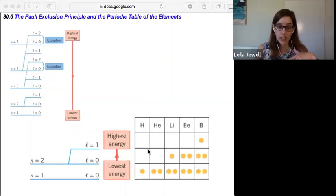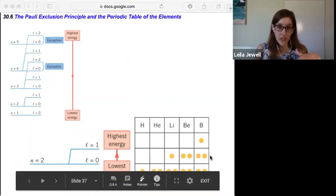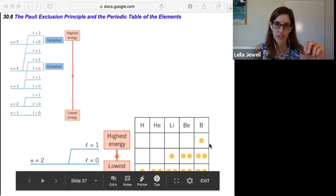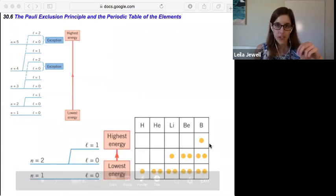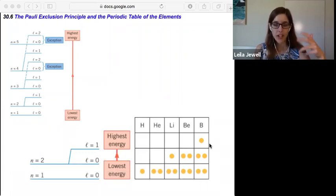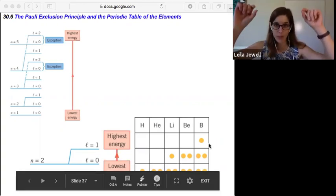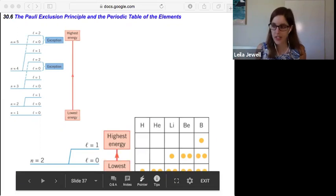And finally with boron, in the l equals zero state, even at n equals two, it can still only take two electrons. So the fifth electron will have to go up to the next energy level. We can follow this process of filling in one electron, as many as we can, as we're building up each of the ground states of the atoms.